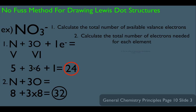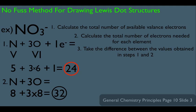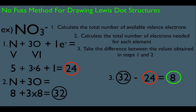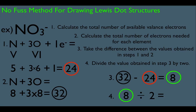Now we're ready for step three: take the difference between the values obtained in steps one and two. We got 32 and 24 — the difference between those two numbers is eight. Always subtract the smaller number from the bigger number. Step four is to divide the value obtained in step three by two. We got eight in step three, so we divide by two, giving us four.